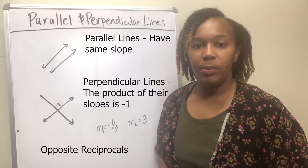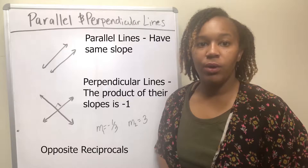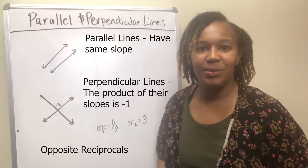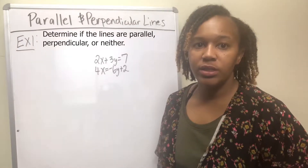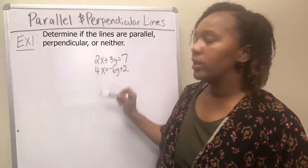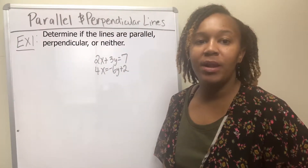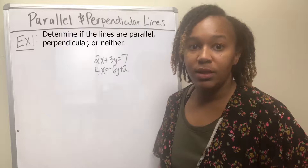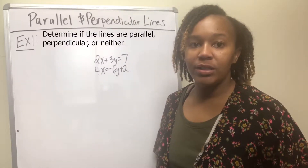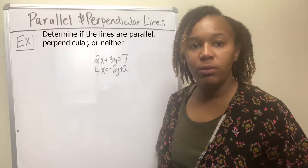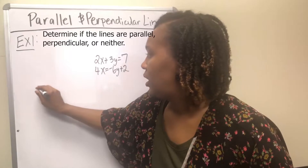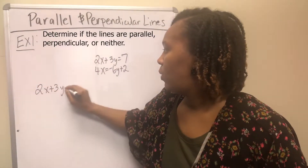So those are parallel and perpendicular lines. Now we're going to work some problems on how to find equations of parallel and perpendicular lines. For example one, we want to determine if the lines are parallel, perpendicular, or neither. In order to determine that, we need to know the slopes of the lines, so we're going to take each line separately and find the slope. We'll put each equation in slope-intercept form, y = mx + b, which means isolating y.